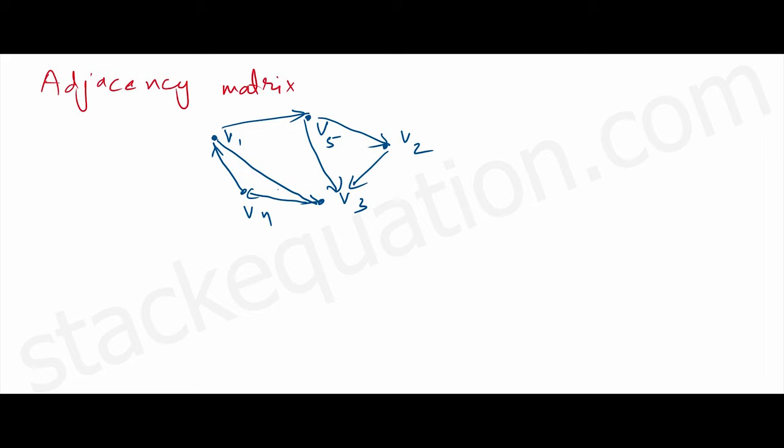This is a directed graph, which has directions from one vertex to the next. We call it a directed graph because V1→V5 is not the same as V5→V1.